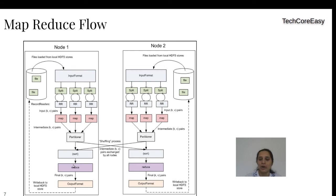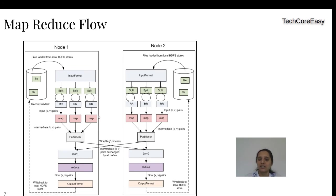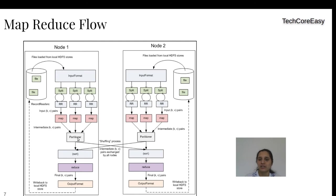Reducers take the output from the mapper and reduce it — they aggregate based on the logic written in the reducer. In Hadoop, all data belonging to a single key always goes to a single reducer. The shuffling phase comes into the picture here — it shuffles data from all different nodes where the mappers are executing and groups data by key. The partitioner performs hashing of the key, and based on that hashed value, shuffling routes the data to the correct reducer.